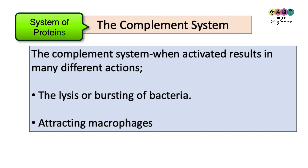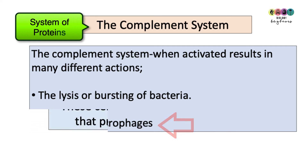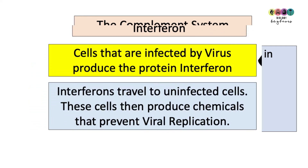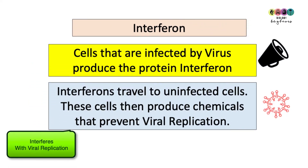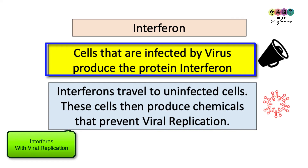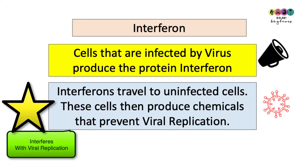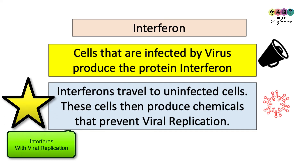Next is the complement system — a system of proteins that, when activated, results in many different actions. Some of these proteins clump together and burst bacterial cells; others attract macrophages. Cells infected by viruses release the protein interferon, which travels to uninfected cells warning them to produce chemicals that prevent viral replication — interferon interferes with viral replication.